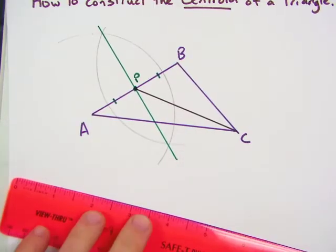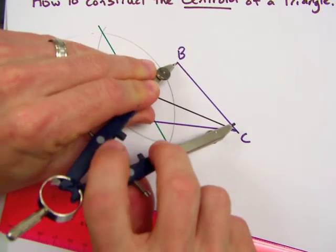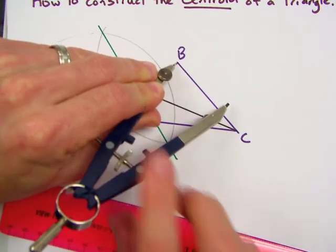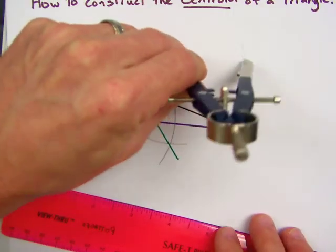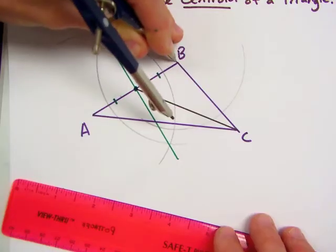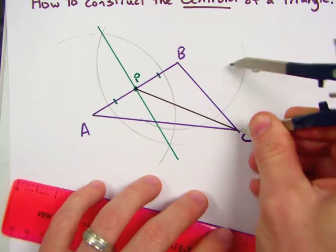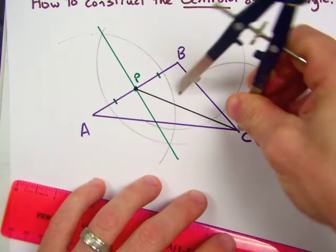So now what we're going to do is also find the midpoint of another side. We can just say BC. So we open up our compass to more than half and draw one arc from point B. And then using the same radius, draw an arc from point C.